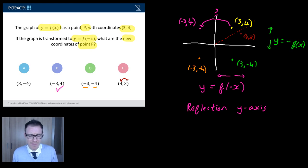I wonder if you can take this question and take the original point (3, 4) and say that's on y = f(x). But this time, I wonder, could you tell me where the point (3, 4) goes if your transformation is -f(-x)?